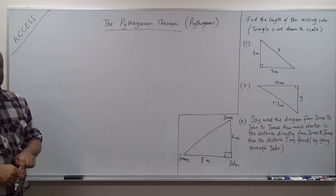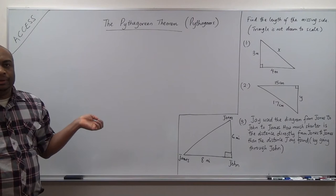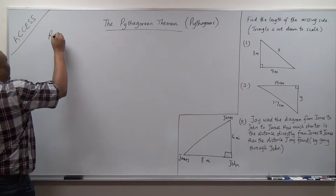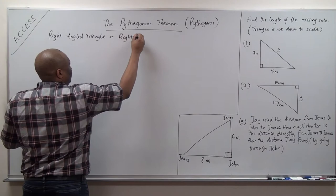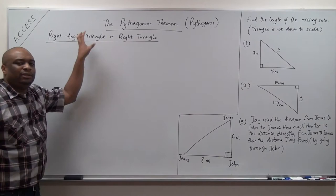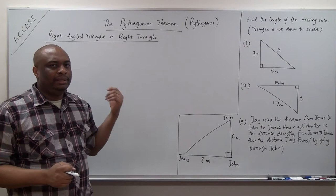Before we continue, we have to look at what we call a right angle triangle, or what you just call a right triangle. Some people call it a right angled triangle or just a right triangle. This theorem deals with only right triangles. If we don't have a right triangle, this theorem will not apply. This theorem will only apply to right triangles.